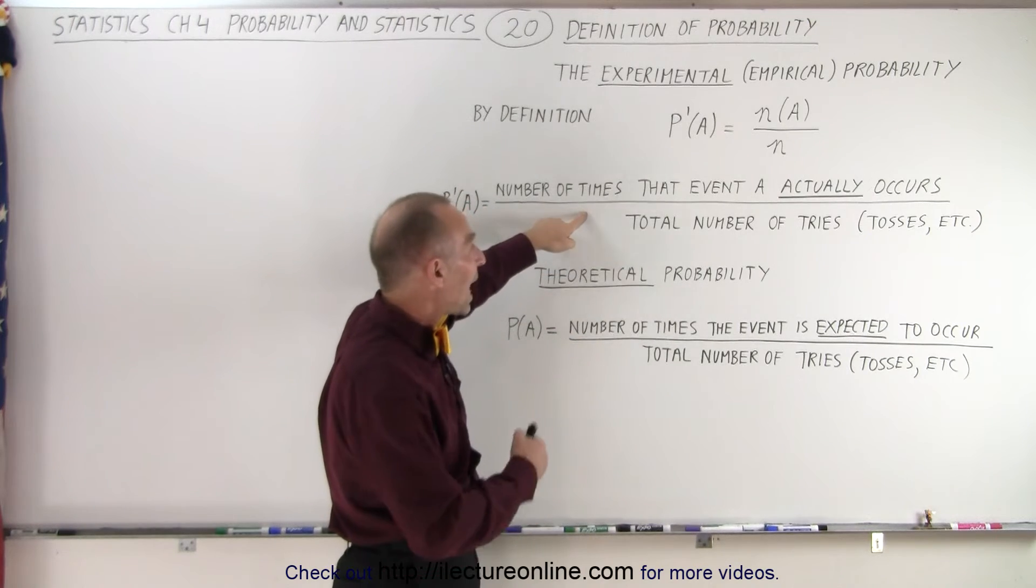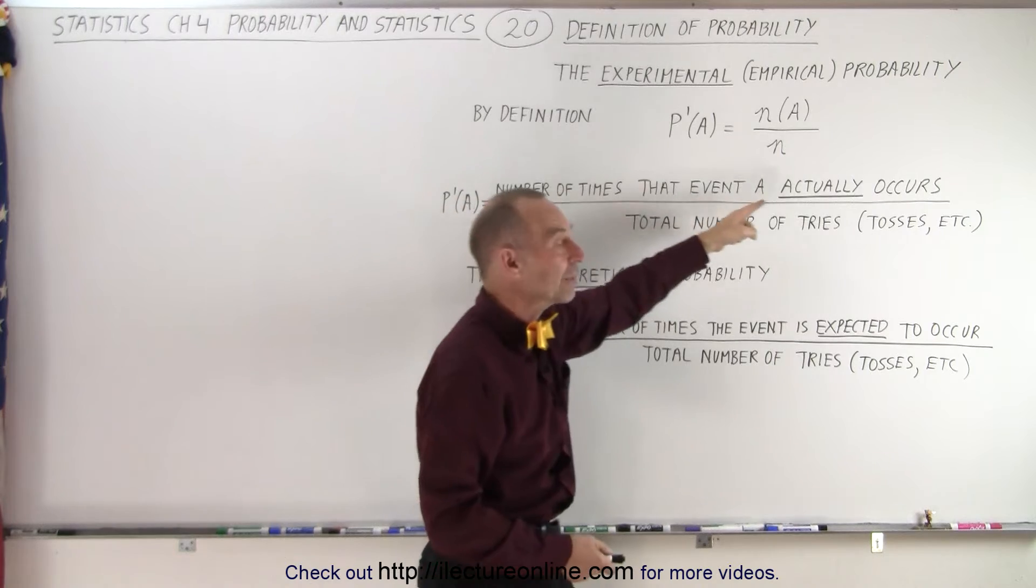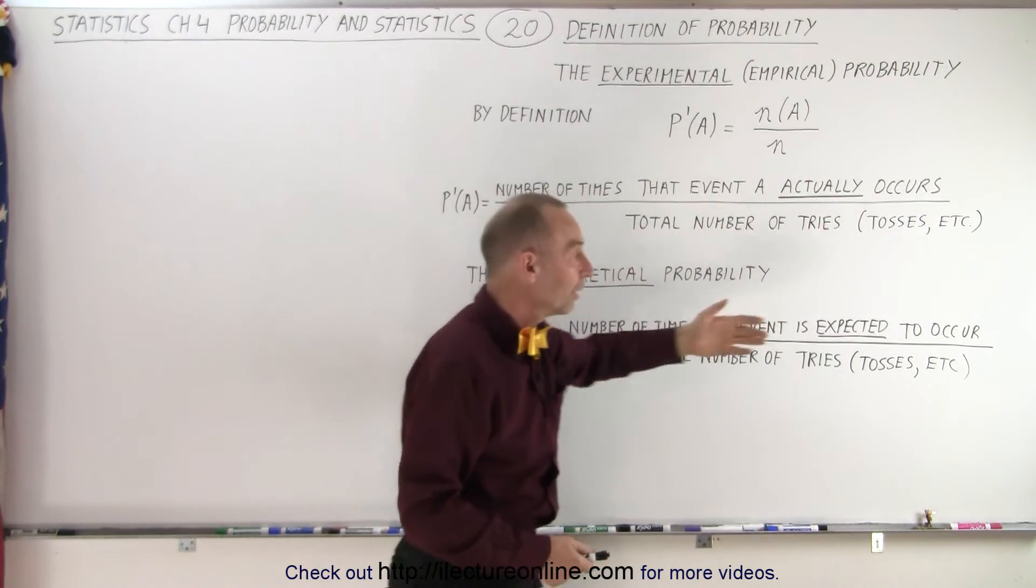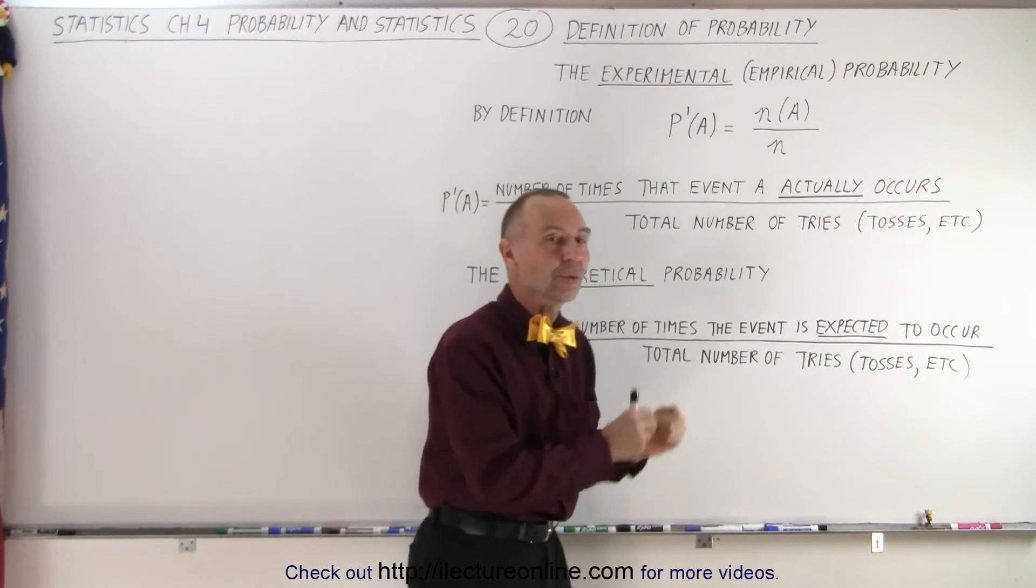the difference is that here we actually are executing an experiment, and we're counting up the number of times it actually occurs. Here, we calculate the number of times the event is expected to occur.